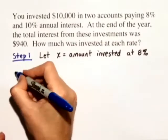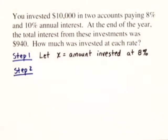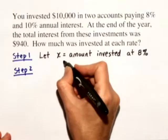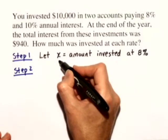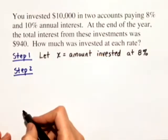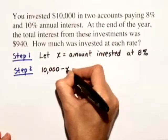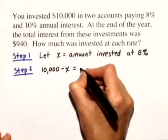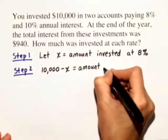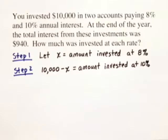Now, in step two, we need to write any other unknown quantities in terms of X. The only other unknown quantity is how much we invested at 10%. So here's how we're going to figure out how much we invested at 10%. Whatever amount we did not invest at 8% is the remaining amount from the $10,000 that we did invest at 10%. So what we can do is we can start with the $10,000 and we can subtract X.